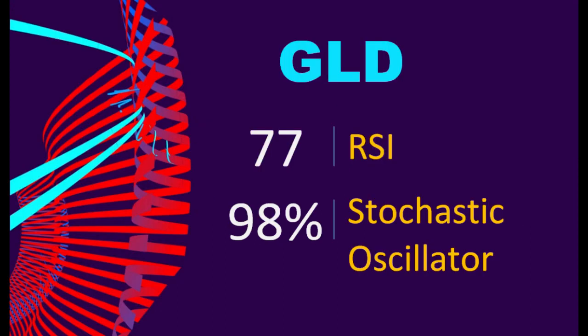1. Gold. Has GLD experienced bullish or bearish technical momentum recently? Technical Signals and Analysis. GLD's 14-Day Relative Strength Index (RSI) value was 77. When the RSI exceeds 75, it is considered to be in the overbought region, the stock price may be overvalued, and a price correction may be required.